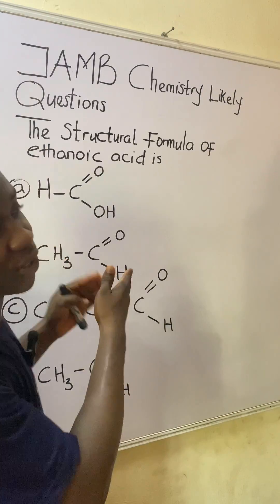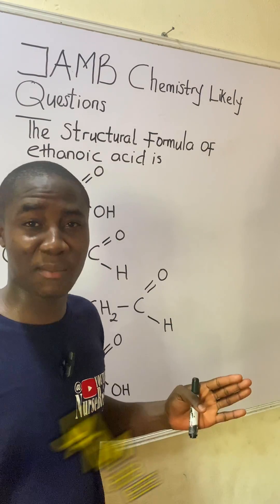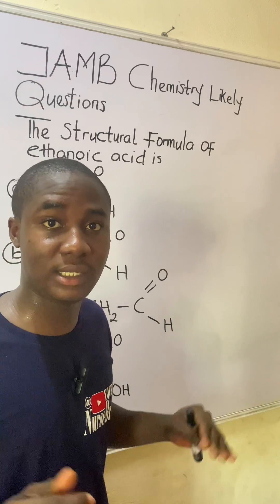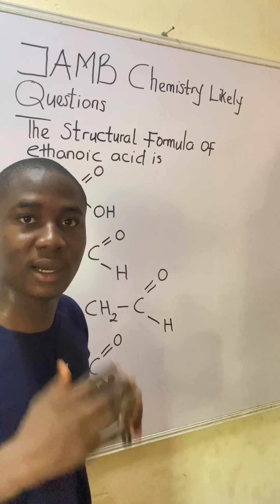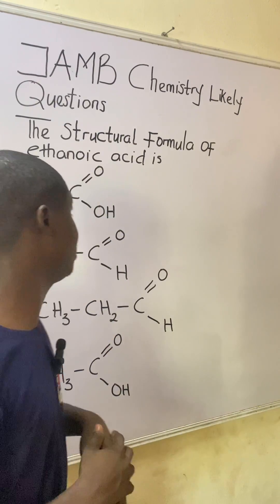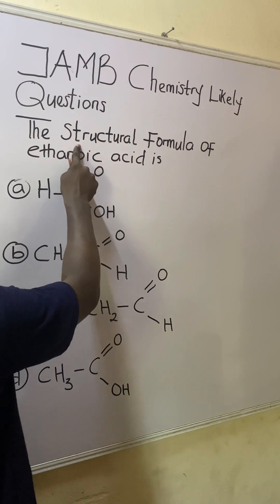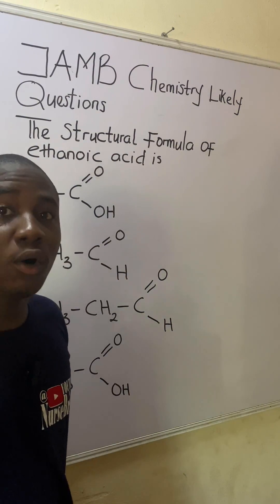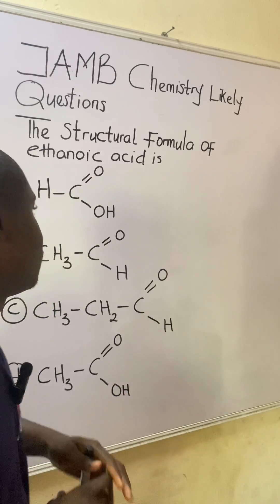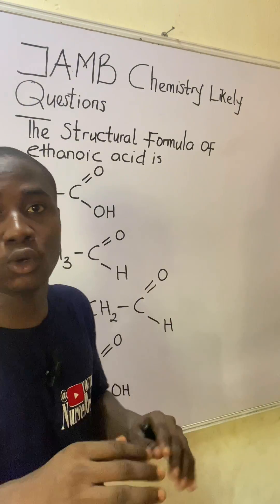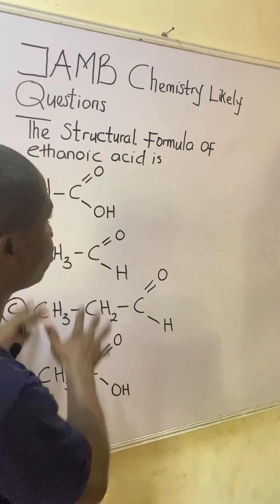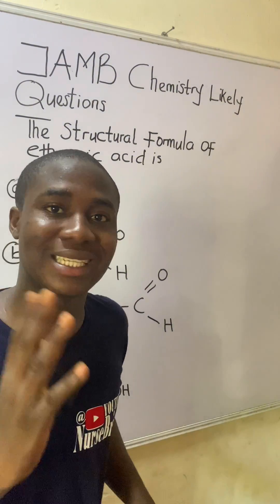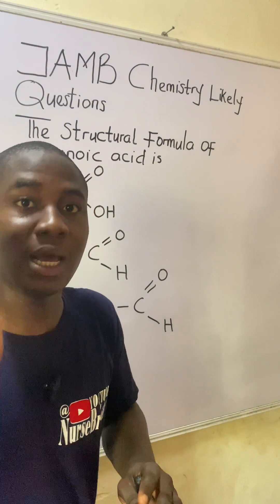If you came across this question in the JAMB exam, how will you solve it? It's actually very easy. Let's solve together. The question says: the structural formula of ethanoic acid is — now they are asking us to locate the structure of this compound called ethanoic acid.